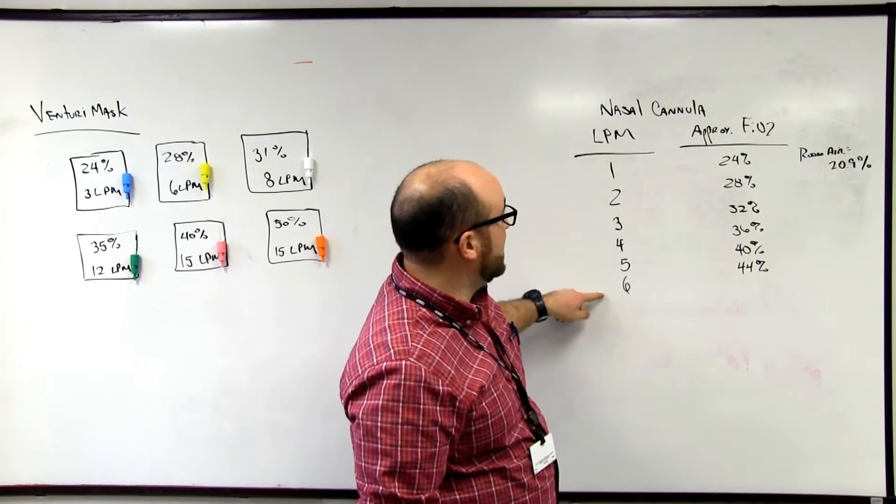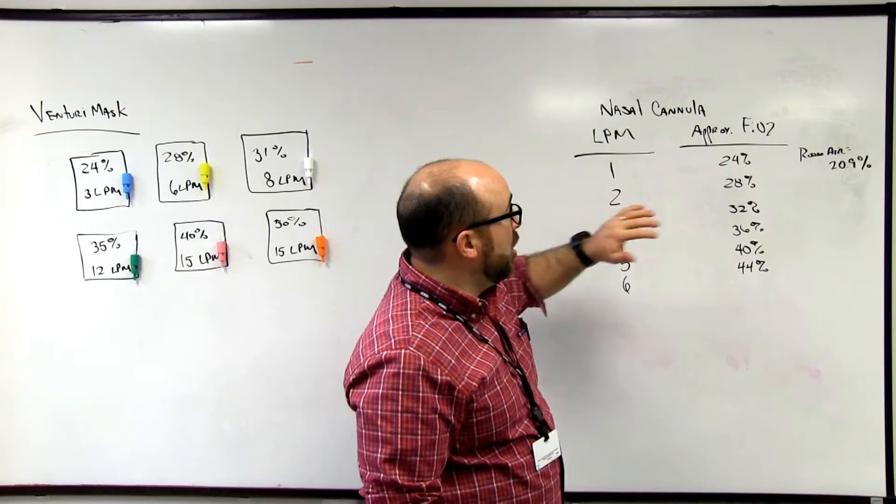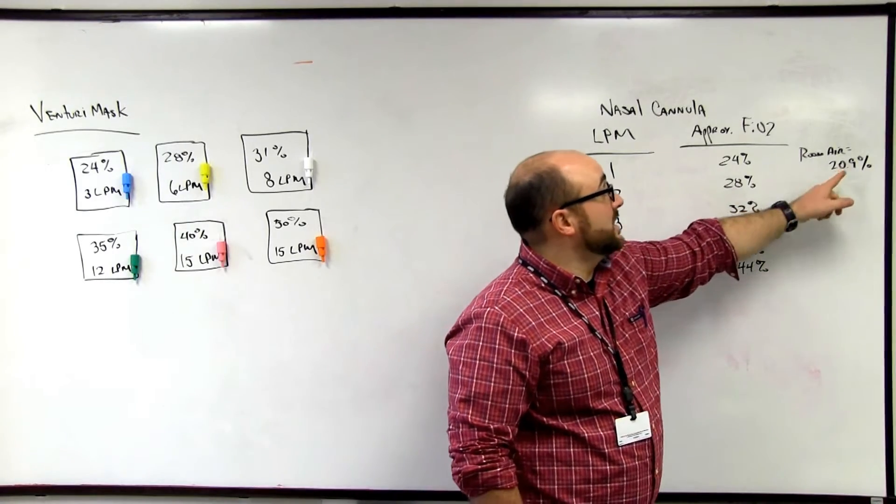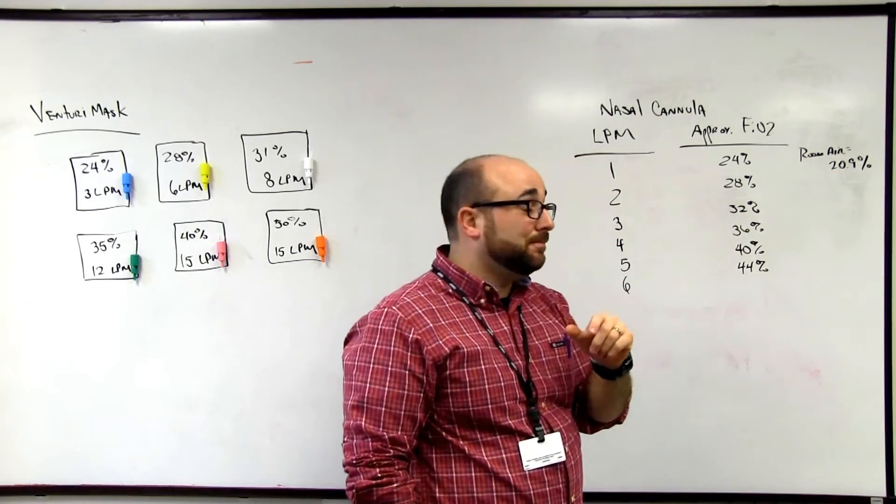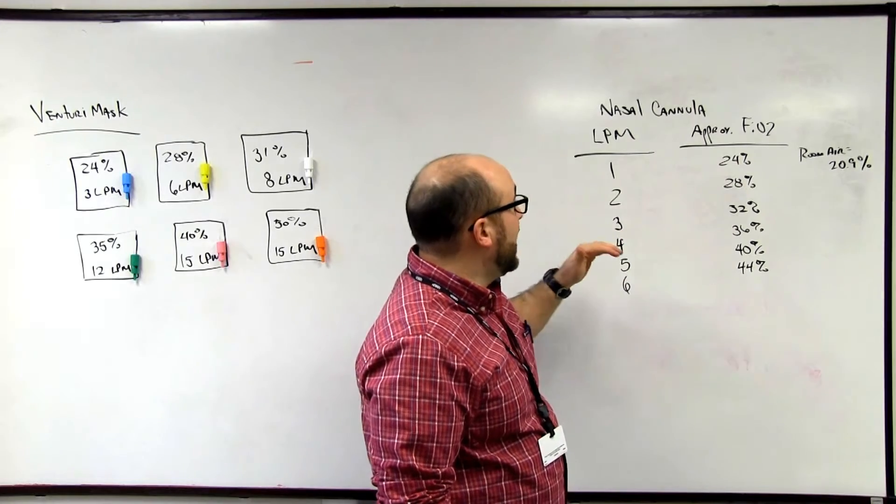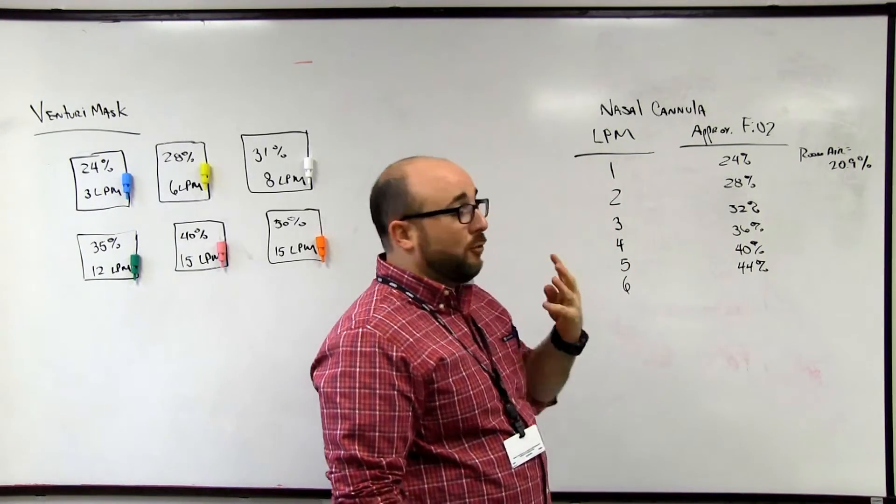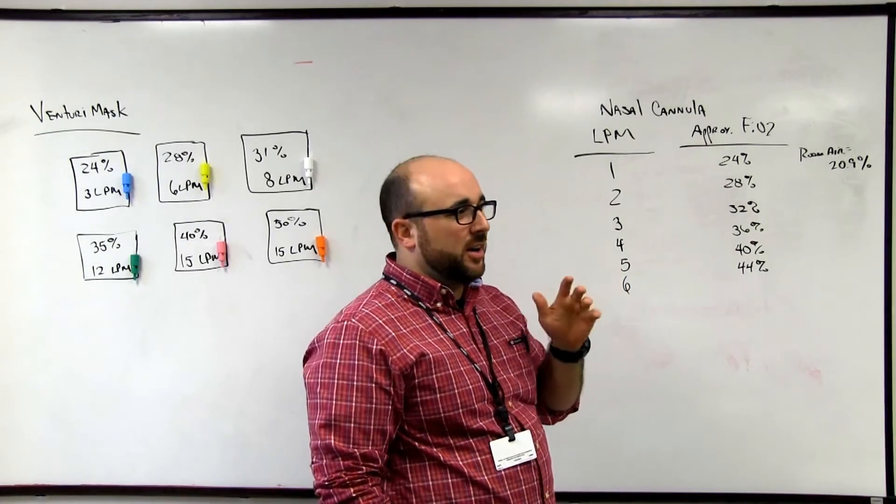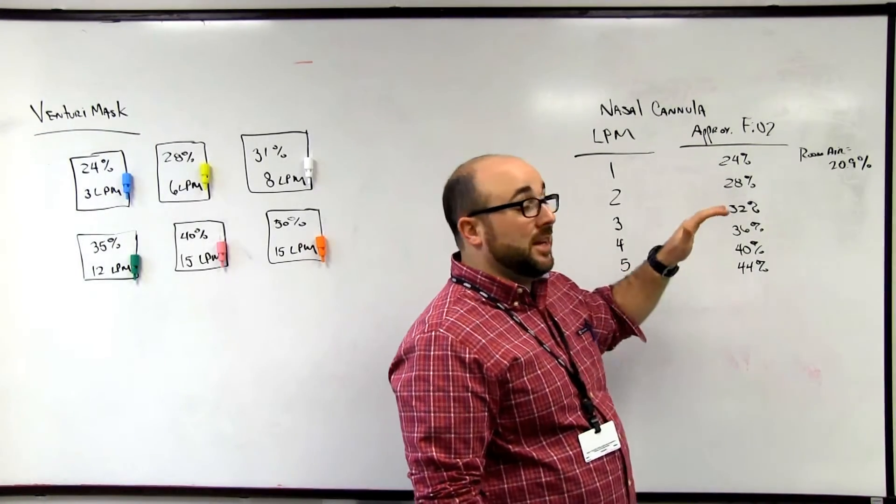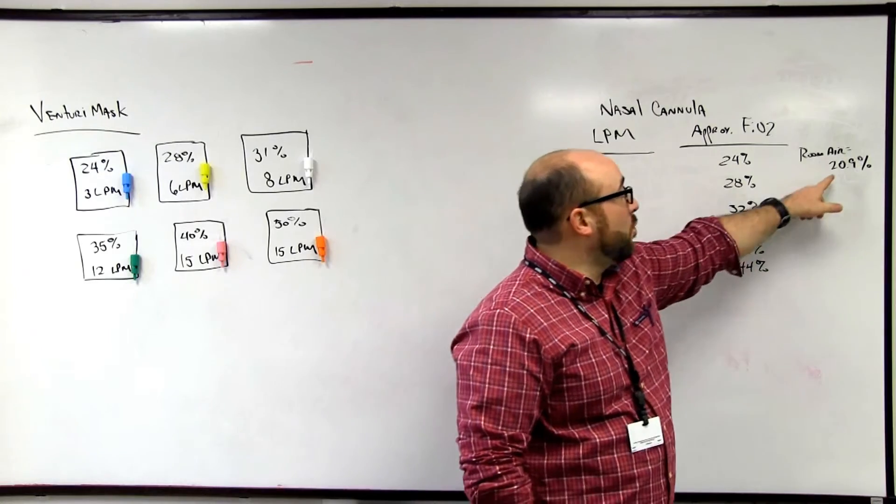So our nasal cannula liter flow, one to six. We know that room air technically is 20.9% oxygen, so in the case of adding a liter per minute, we're going to add 4%. You can see that in there. It's a very easy equation and we like to keep it easy because we're RTs, so we start at 20.